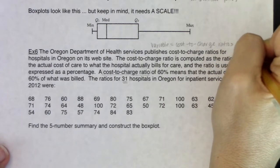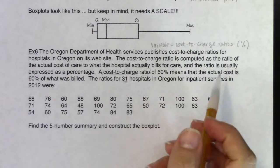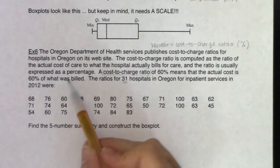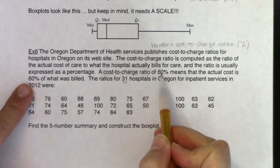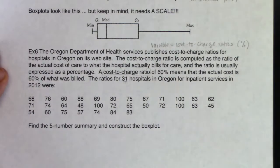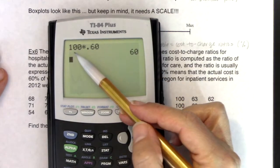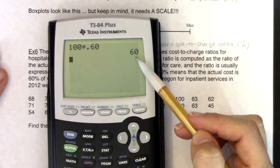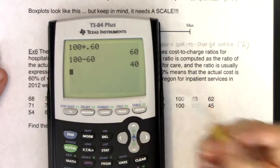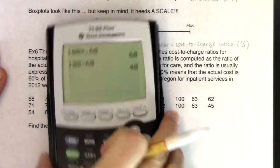The units are percentages. To give you an idea: a 60% cost-to-charge ratio means the actual cost was 60% of what was billed — the hospital is making a 40% profit. For example, if you got a bill for $100 at a 60% cost-to-charge ratio, multiply $100 by 0.60 — it actually cost the hospital $60. They charged $100 but only spent $60, making $40 off your visit. The lower the cost-to-charge ratio, the shadier the hospital.